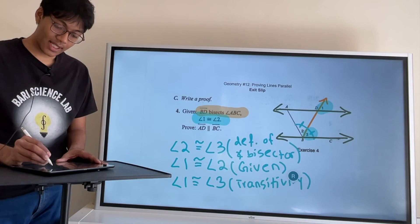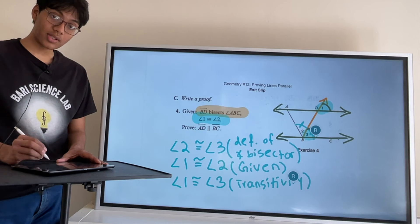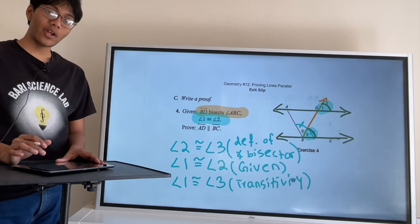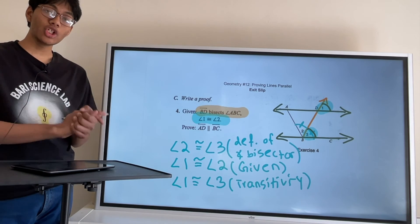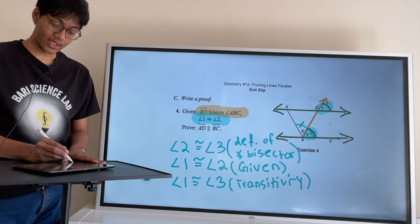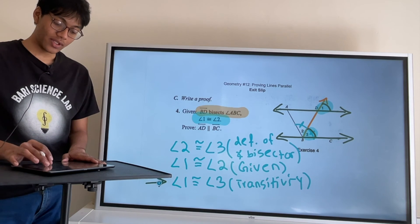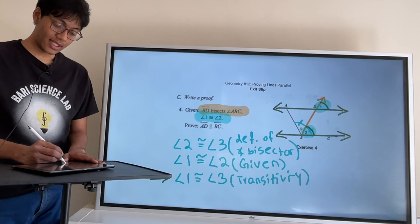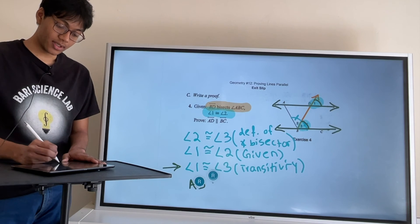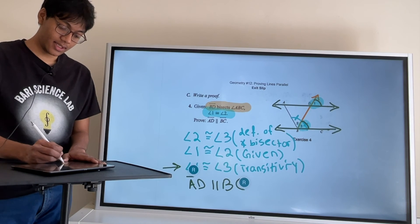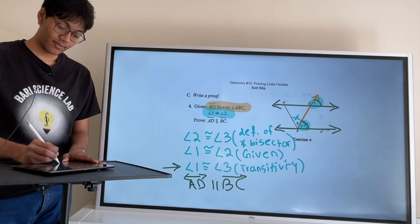And notice how angle 1 and angle 3 are corresponding angles. So if you have parallel lines, corresponding angles should be equal. And in fact, they are. And so we have just concluded that AD is parallel to BC. Line AD is parallel to line BC. And we're done. We are done.